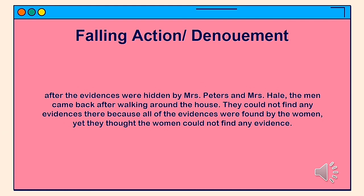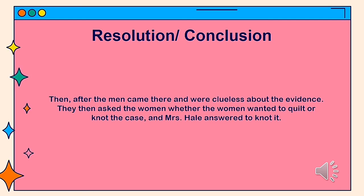Following action: After the evidence was hidden by Mrs. Peters and Mrs. Hale, the men came back after walking around the house. They could not find any evidence because all of the evidence had been found by the women. Yet, the men told the women they could not find any evidence. Resolution: After the men came back clueless about the evidence, they did not ask the women whether they wanted to pursue the case or not. Mrs. Hale answered to drop it.